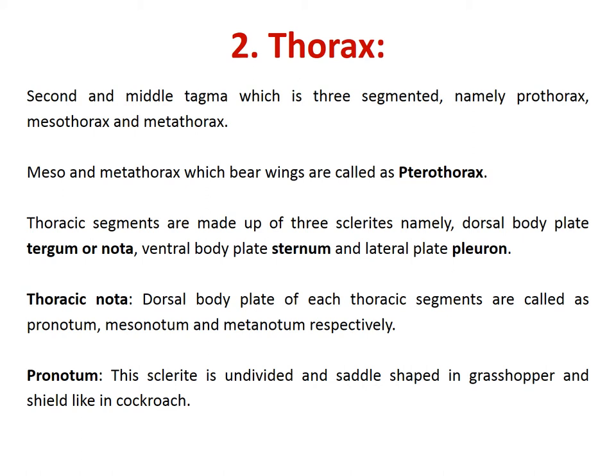The thorax has three parts: prothorax, mesothorax and metathorax. The mesothorax and metathorax where wings are present are called as the pterothorax — 'ptero' means wing. The prothorax does not have wings. The thorax segments are made up of three sclerites: the dorsal body plate called tergum or nota, the ventral body plate called sternum, and in between the dorsal and ventral plate, we have the lateral pleuron.